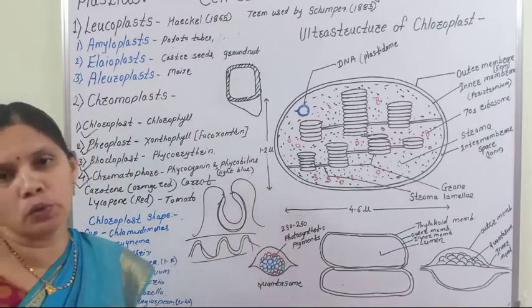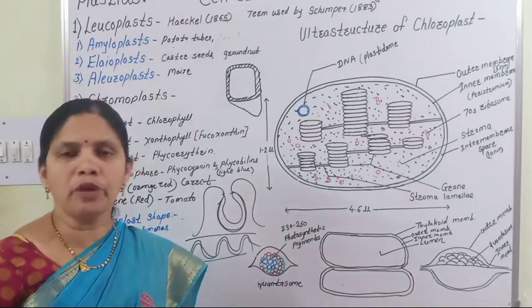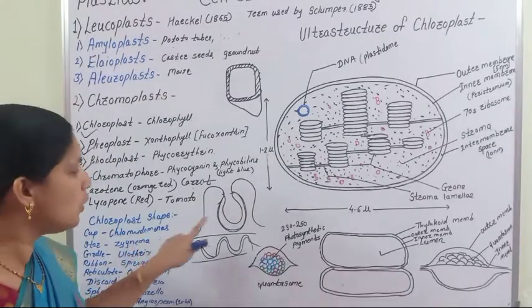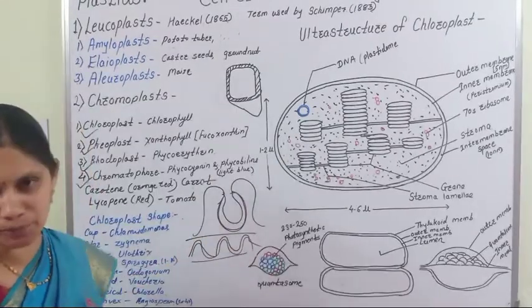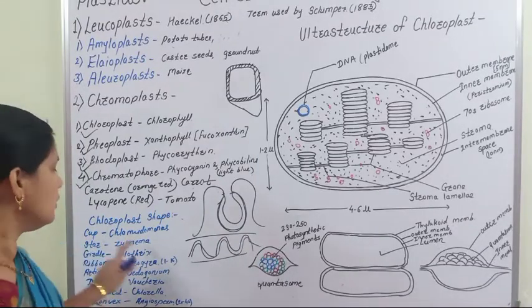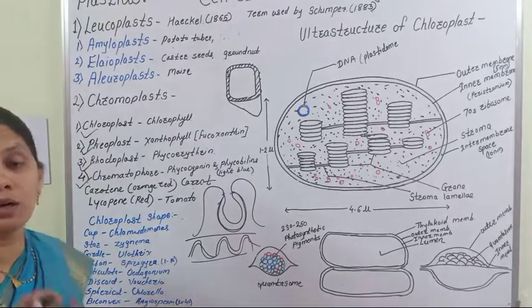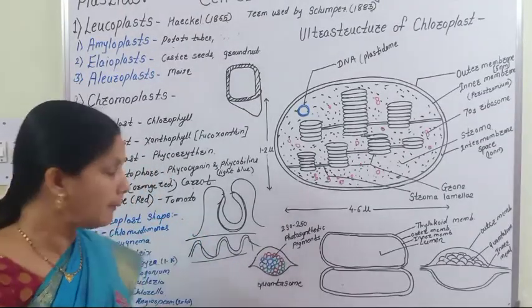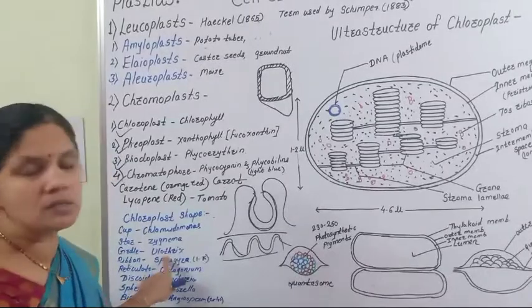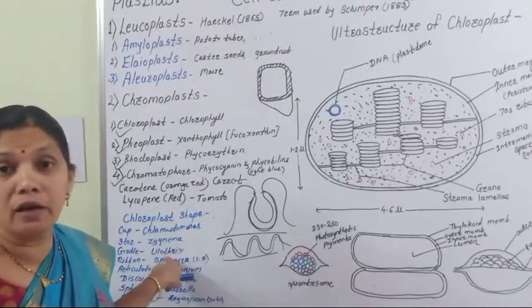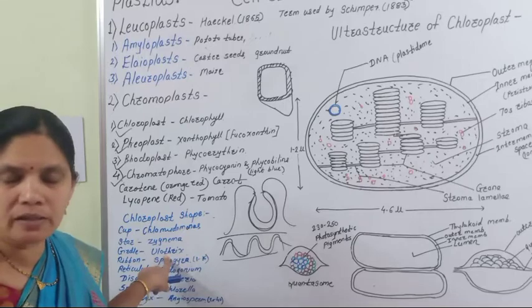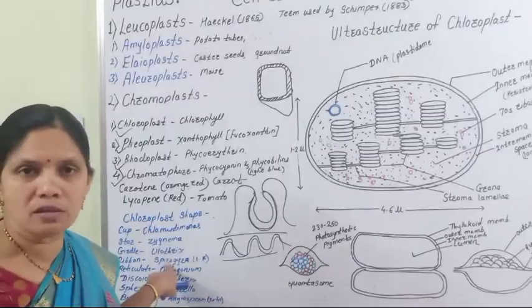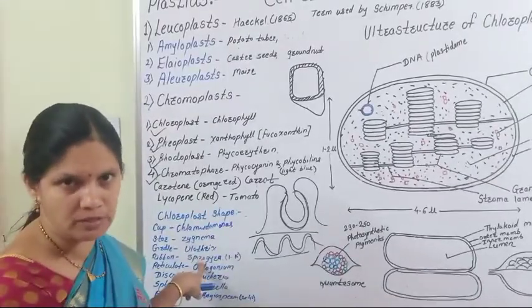The shape of the chloroplast also shows variation. In Chlamydomonas, it is cup-shaped. In Zygnema, the chloroplast is star-shaped. In Ulothrix, the chloroplast is girdle-like. In Spirogyra, the chloroplast is ribbon-shaped.